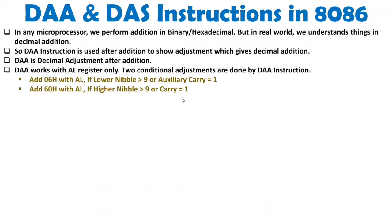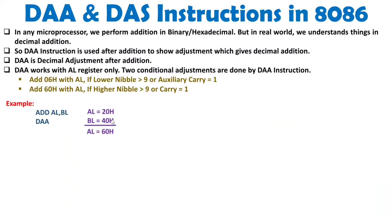Let us understand this with practical examples. First: AL = 20H, BL = 40H. After addition, the result is 60H. Here, the lower nibble is less than 9, there is no auxiliary carry, and the upper nibble is less than 9 with no carry. So no adjustment is needed — 20 plus 40 equals 60 in decimal, which is correct. Second example: 56H plus 23H. 6 plus 3 is 9, and 5 plus 2 is 7, giving 79H. Again, all nibbles are below 9 and there are no carry flags, so this is already correct decimal addition.